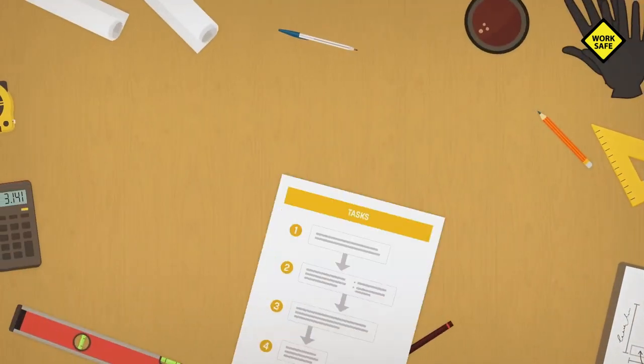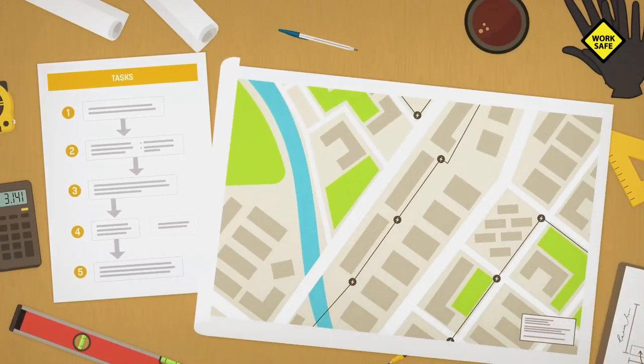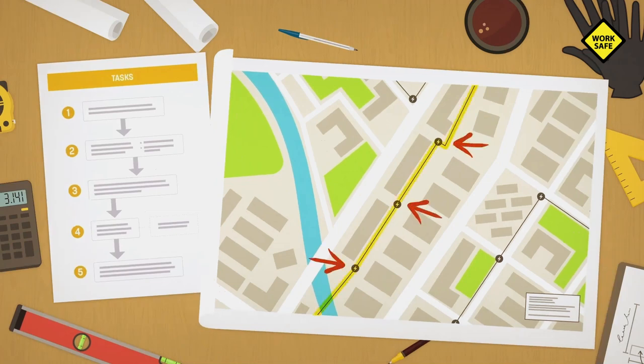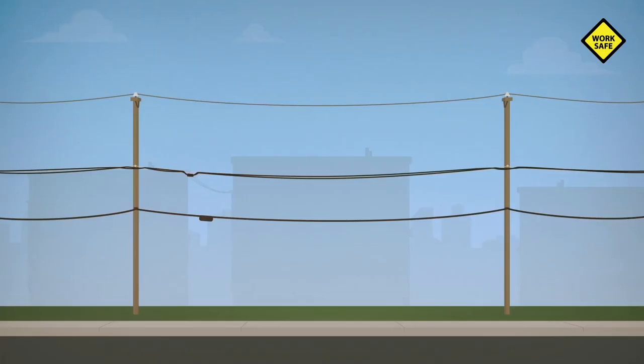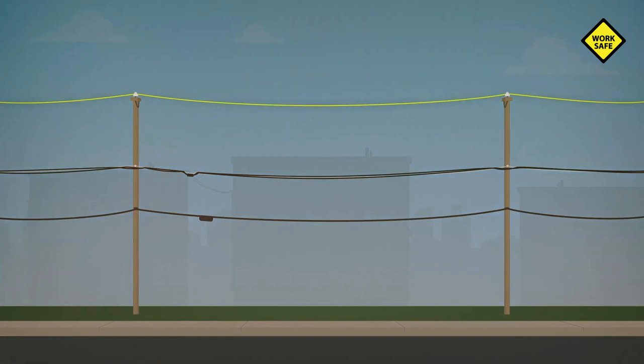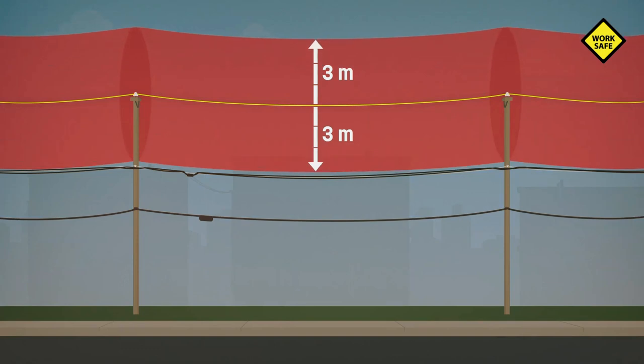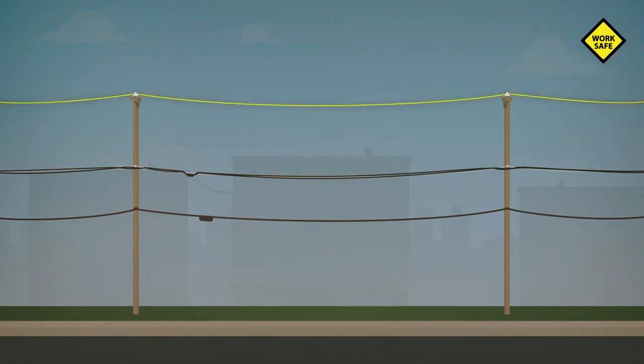Don't wait until the job starts to identify tasks and locate live wires from which to maintain a safe distance. For medium voltage lines, from 750 to 34,500 volts, you must maintain a minimum distance of 3 meters. These are the highest lines. Sometimes there's only one, but often there are three.